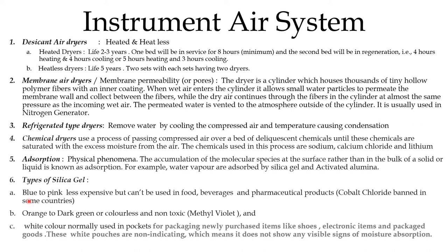Silica gel is of three types. One is blue to pink — which is cobalt chloride — and it is banned in many countries. It is less expensive but cannot be used in food, beverages and pharmaceutical products because cobalt chloride is toxic. The next type changes from orange to dark green; when it adsorbs moisture it becomes dark green or colorless, but it is non-toxic. It is the methyl violet type and can be used anywhere. The third is white color silica gel, normally used in packets for newly purchased items like shoes, electronic items and packaged goods. These white pouches are non-indicating — they do not show any visible sign of moisture adsorption.